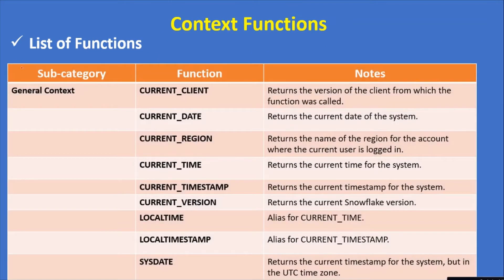Under the context functions subcategory, we can divide context functions into three categories. The first one is the general context. Under general context we have different functions. The first function is current_client, which returns the version of the client from which the function was called.